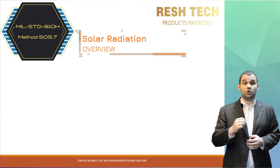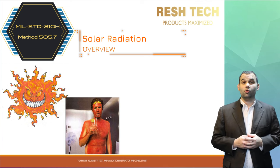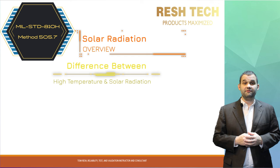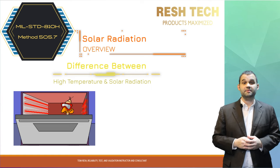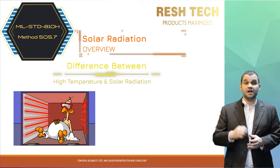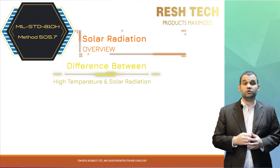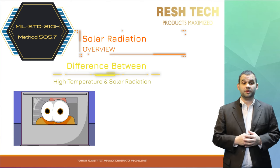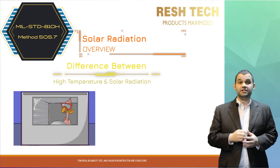Let's hop over to an overview of Method 505.7 for solar radiation. Solar radiation is a simulation of direct sunlight exposure on a system or piece of hardware. A good way to understand the difference between high temperature and solar radiation: high temperature can be visualized as a system sitting inside an unconditioned building in the middle of a desert, where the air surrounding the system is at a high temperature — say 50°C — but the system is inside a shelter and not directly exposed to sunlight. It is being indirectly heated by the sun via heat transfer and the insulation properties of the shelter, causing uniform heating of the entire system.